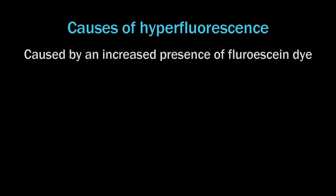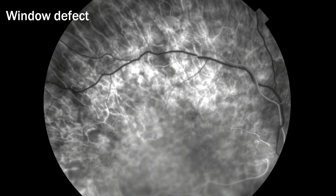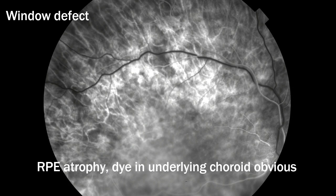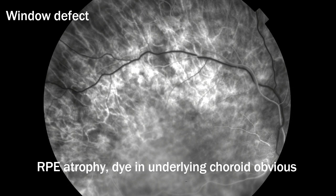What are the causes of hyperfluorescence? You have a window defect — if you inject, it goes into the choroid and it flashes up nice and bright because there's no RPE. The RPE is meant to block it, and if it isn't there, you have a window defect. The second cause is leakage.